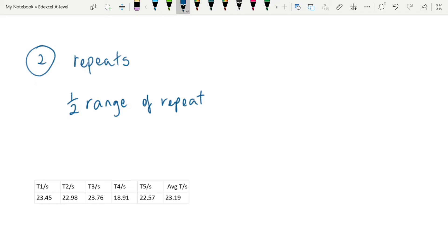So I've put some data down here, timing data, and we're going to look at calculating the uncertainty in this. So the first thing you need to do for any repeats is to calculate an average.